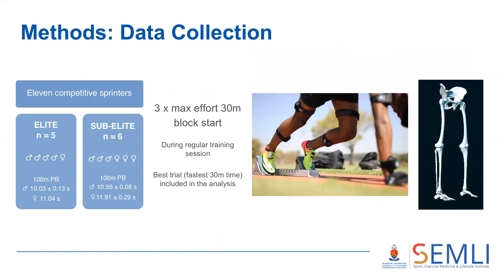Eleven competitive sprinters took part in the study, with five classified as elite based on 100-meter personal best times of less than 10.2 seconds for males and 11.2 seconds for females. Testing was conducted during a training session on an outdoor athletics track, where athletes performed their regular warm-up followed by three 30-meter maximum effort block starts with at least five minutes rest between efforts. The fastest of the three trials was included in the analysis.